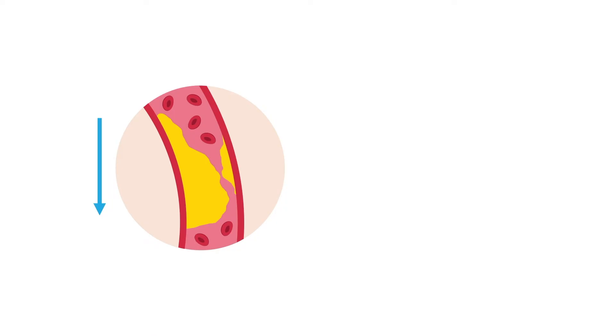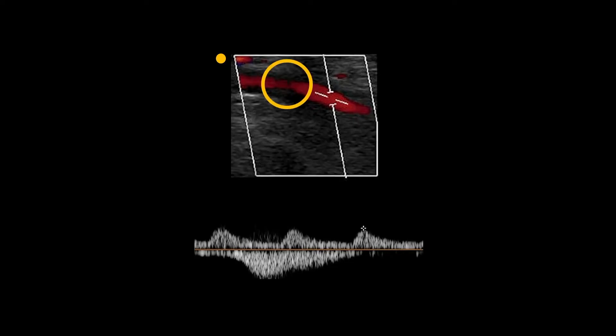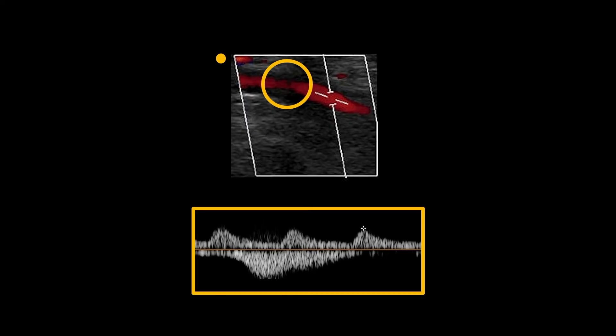This happens because as the diameter of the lumen decreases from stenosis, the velocity of the blood increases. Velocities will be discussed in more detail in Lesson 3. Waveforms distal to a significant stenosis are usually monophasic. The area below the baseline on this waveform is simply phasic vein Doppler interference, which is blood flow in the veins.